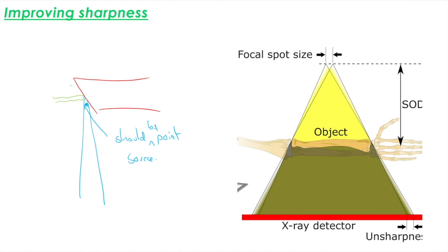So it should be a point source. And again, like I said, the thinner the beam of electrons, the more like a point source it's going to act.